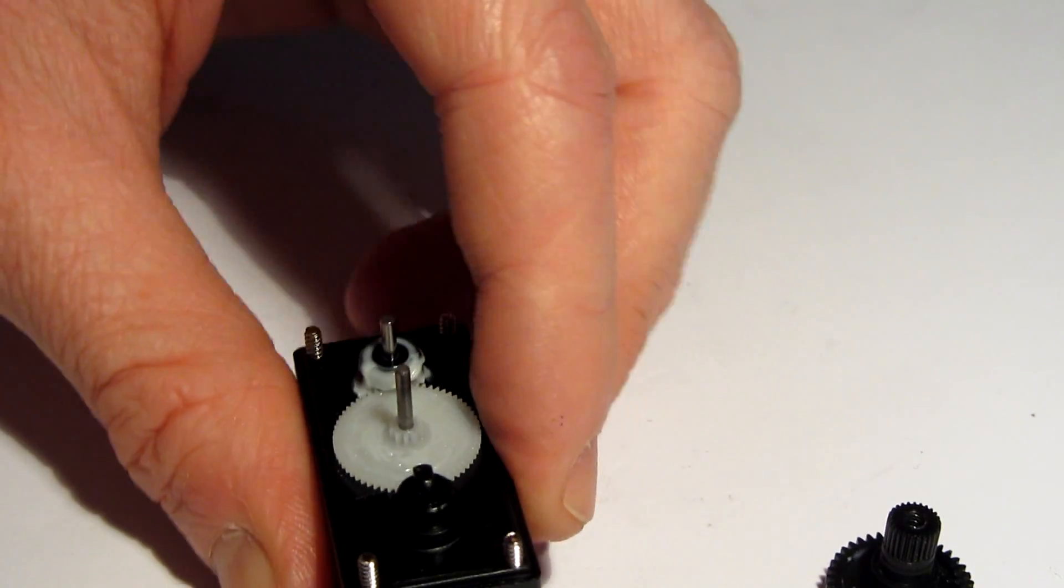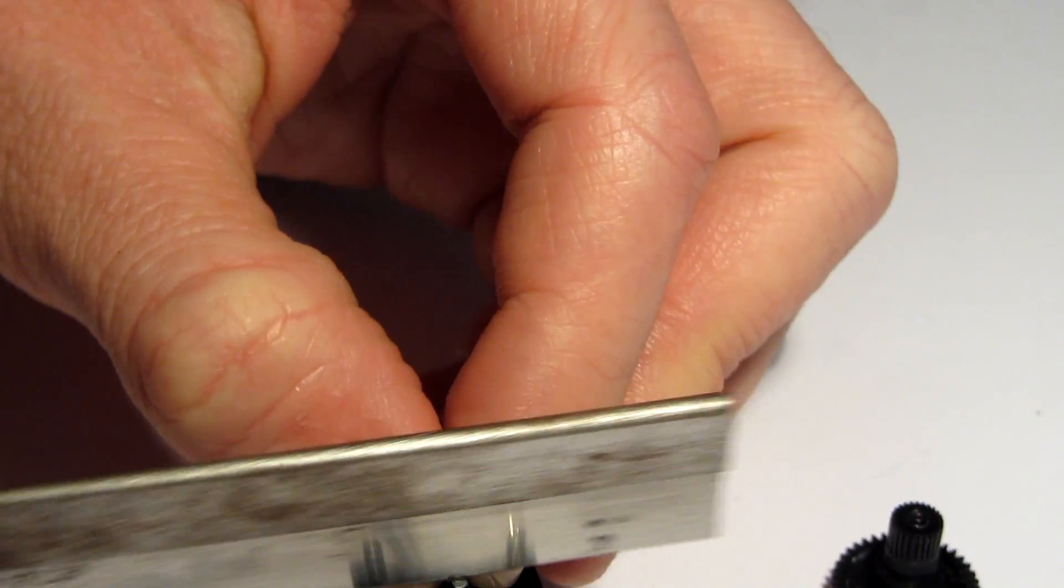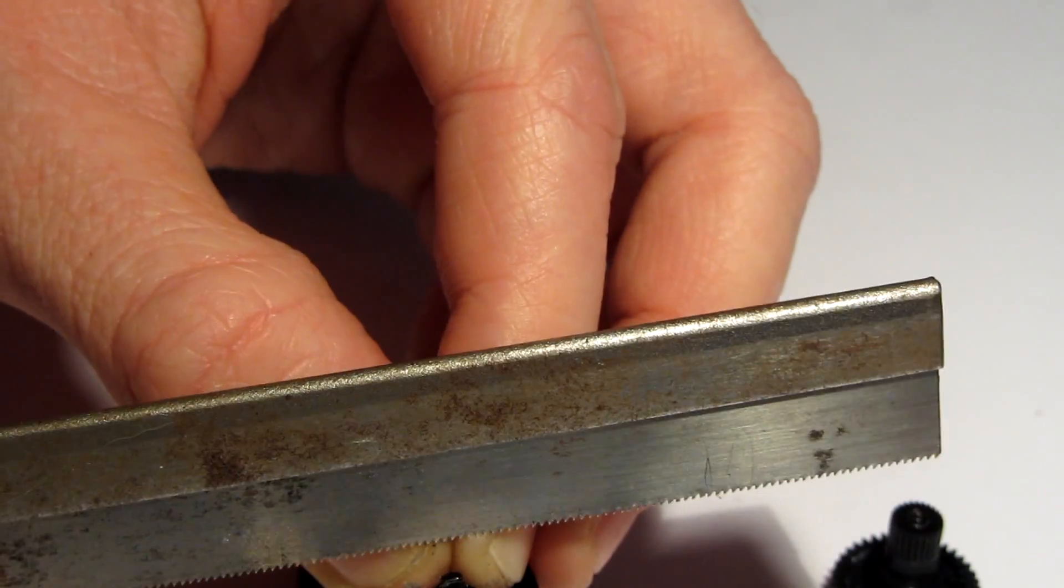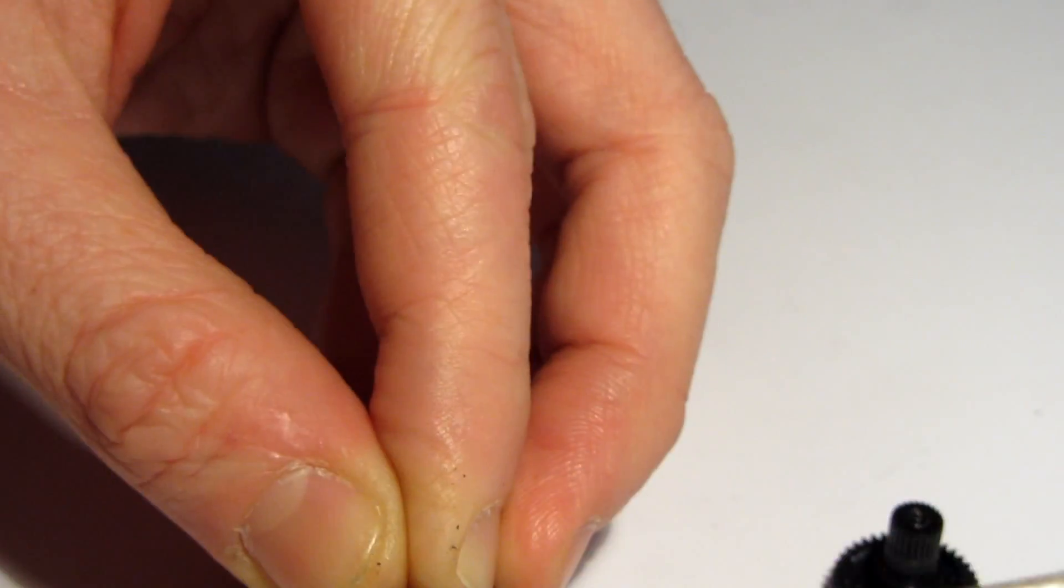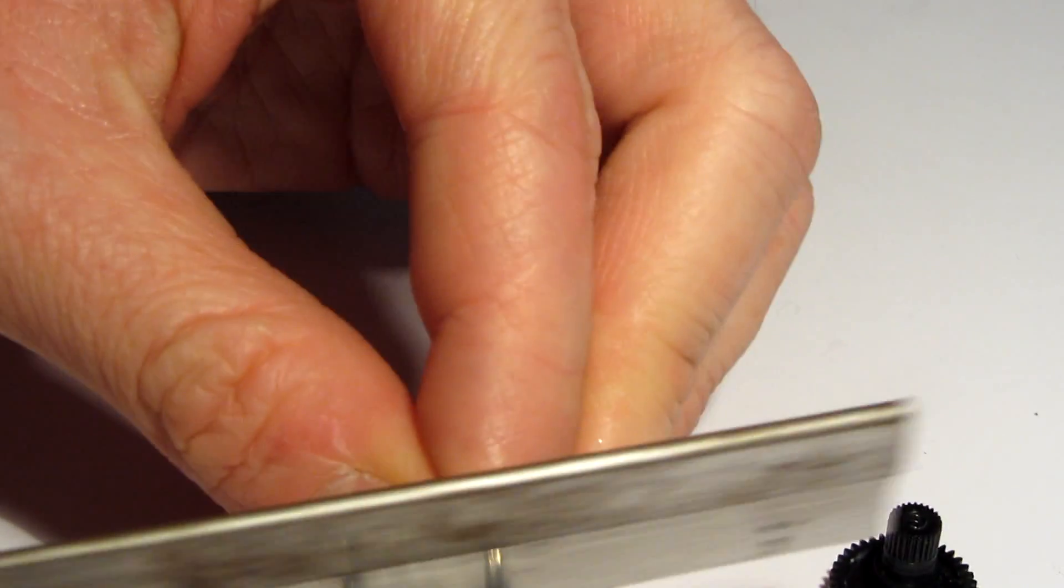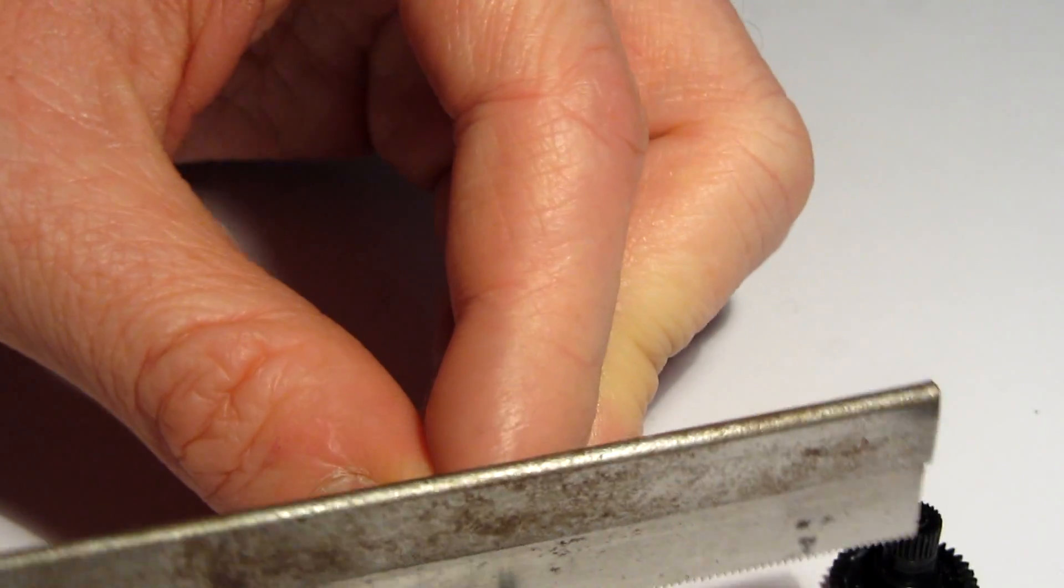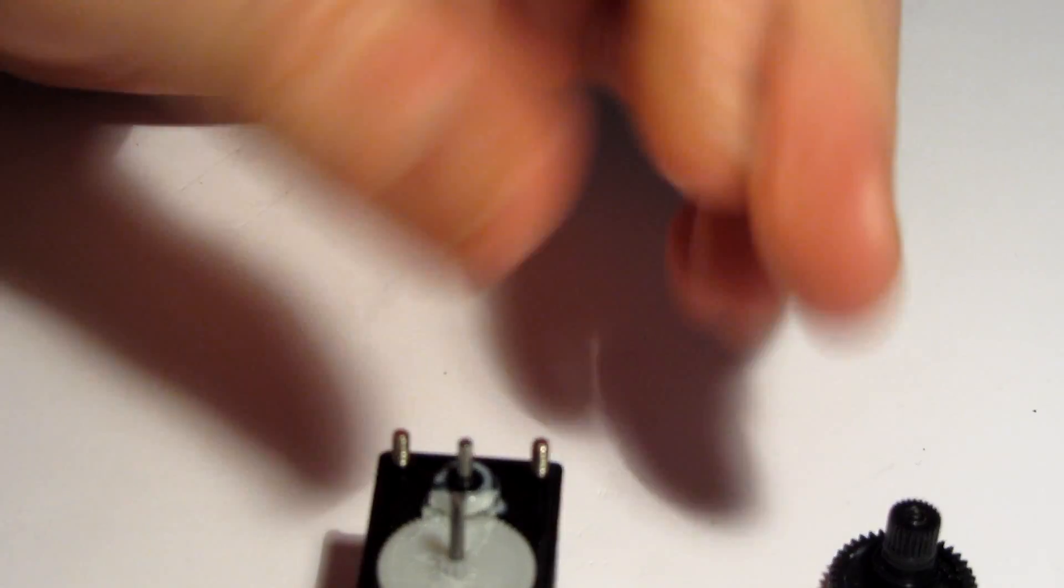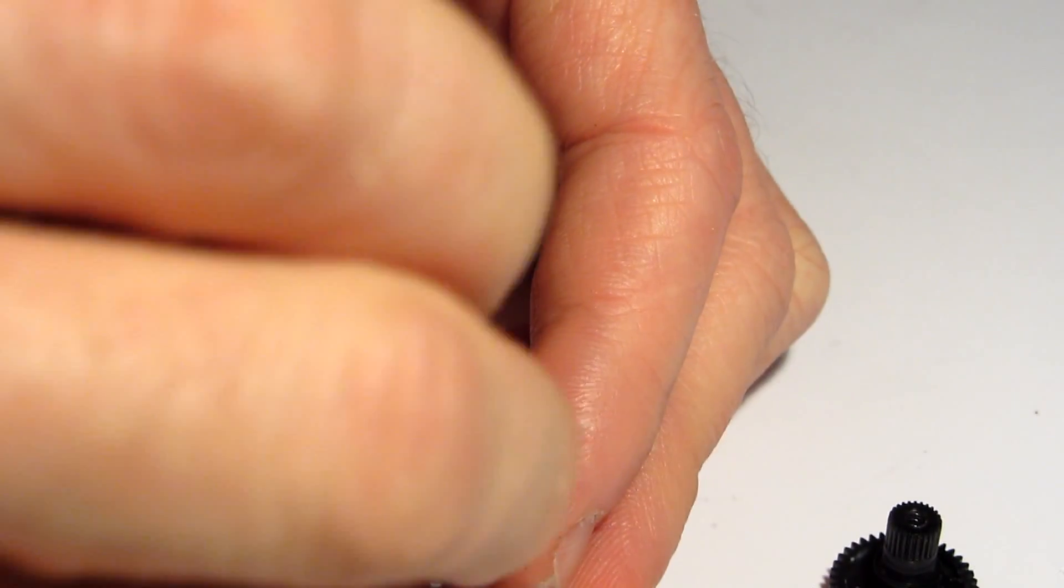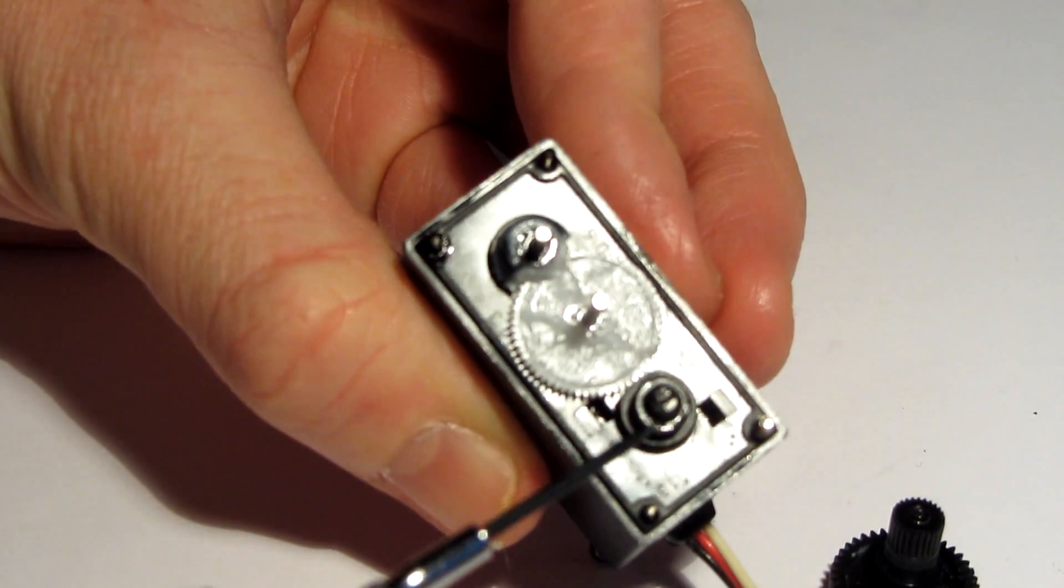We're going to take our saw again and cut a notch across the top so we can adjust it with a screwdriver. This blade is quite fine, so I need to do a couple of incisions to make it wide enough. You can take your screwdriver and give it a quick test. We can adjust that now, and that's most of the hard work done.